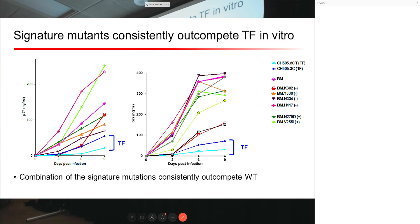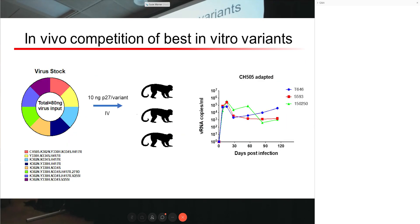We made all combinations of these mutants in infectious molecular clones and tested them in in vitro replication experiments across multiple primary donors. The exact order of the mutations differed across donors in terms of which replicates better, but consistently our mutants replicated far better than the wild type or transmitted founder virus. We consistently saw enhanced in vitro replication with these signature viruses.